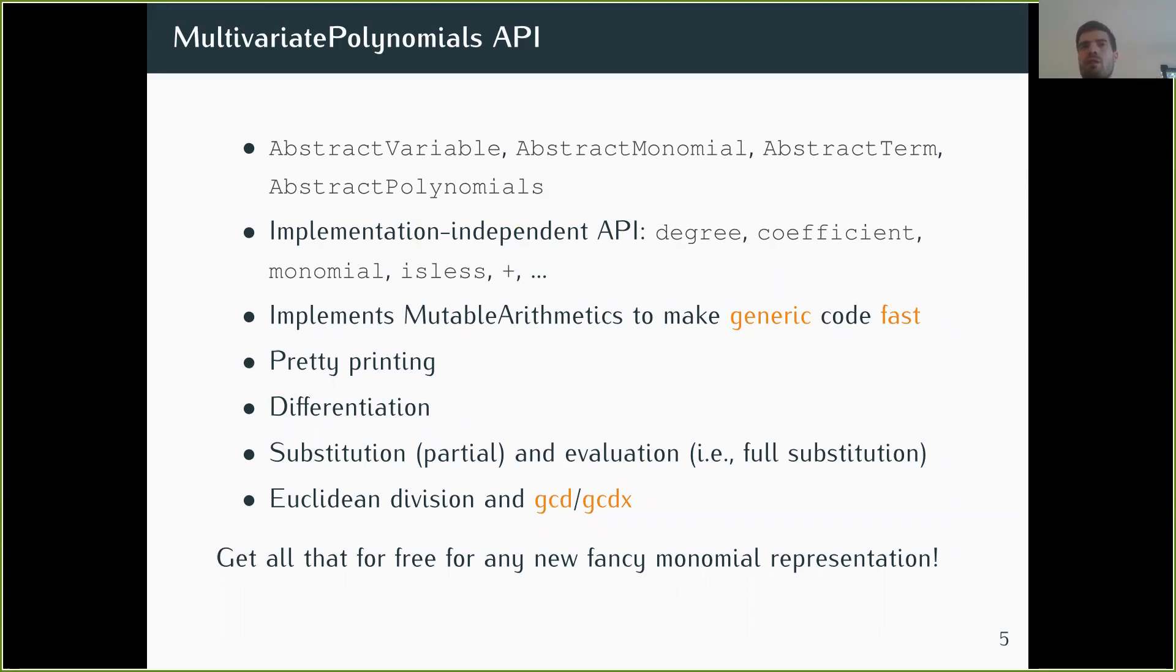And of course, every other algorithm that is built on top of MultivariatePolynomials API and does not use any internal assumptions on one of the particular four representations will also work for not only all the current implementations of monomials but also all the future ones if they just use this API.